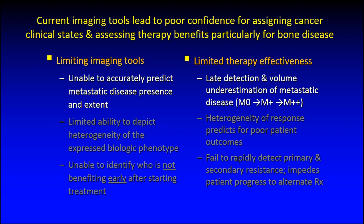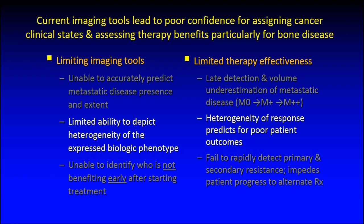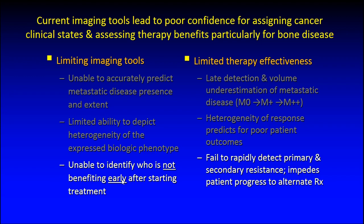Often times when we think patients have no metastatic disease, they in fact do have it. When we think patients have low volume metastatic disease, they have higher volumes. We also have a limited ability to depict the heterogeneity of the expressed biological phenotype — just by looking at the tumour you can't tell how heterogeneous it is. Heterogeneity in the setting of therapy response predicts for poor patient outcomes. Furthermore, we are unable to identify who is not benefitting early after starting therapy, meaning we fail to detect primary and secondary resistance, which impedes patients progressing to alternative therapies.